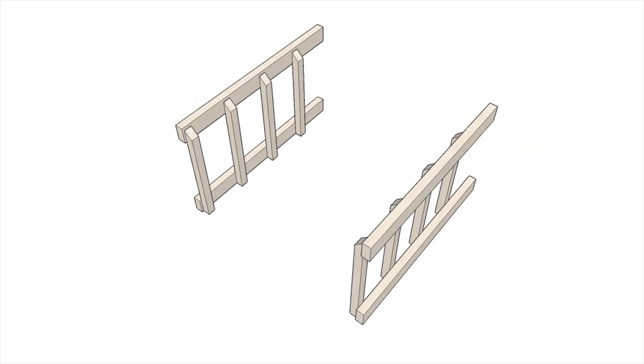To start, arrange the left and right side ladders on the floor or a table. Make sure that the angled bottle supports are facing the same direction.